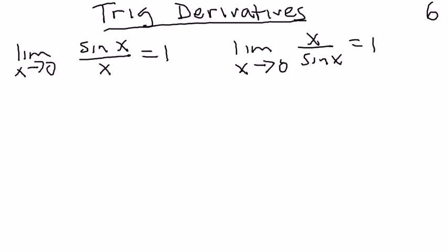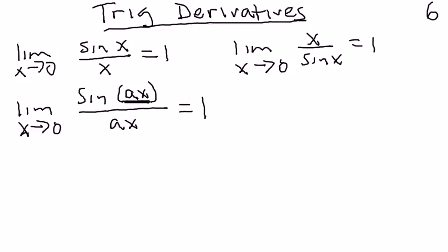You can also multiply that angle. You can put a b value in there in front of the angle, or what our book uses is an a value. You can say the limit as x approaches 0 of the sine of ax over ax, that's still going to be 1. So provided that whatever you're multiplying that angle by, the ax is the same in both the numerator and denominator, that limit is going to be 1.